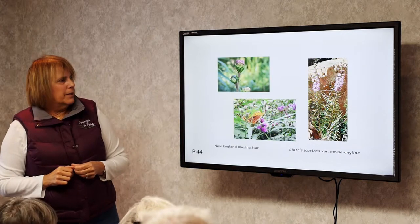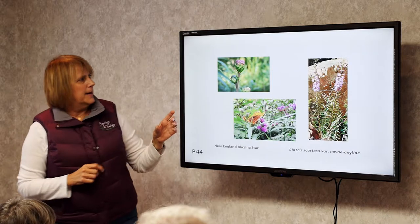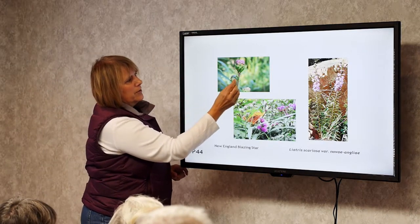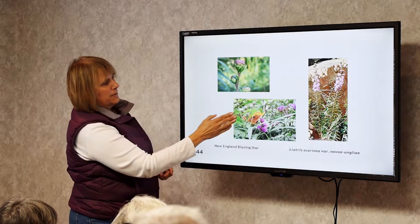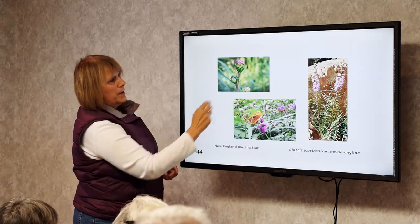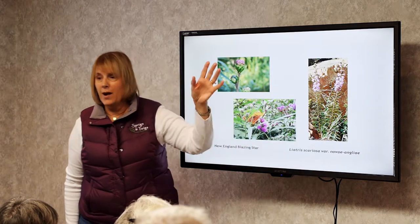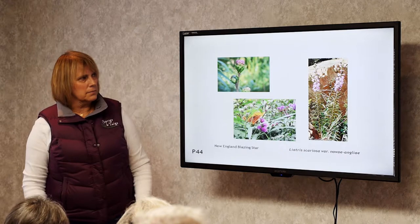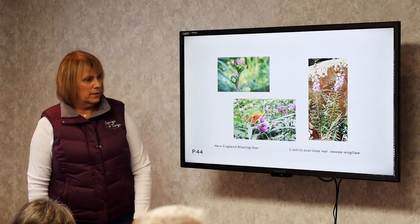New England Blazing Star. We have a cultivar where the flower buds are closer together and more solid going up, but this is the native version which is a little more open, usually found in meadows out west. A great butterfly plant — it prefers dry, depleted soil with no fertilizer.